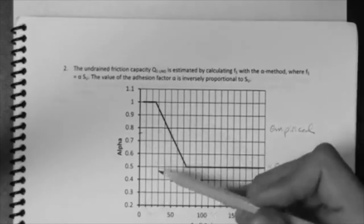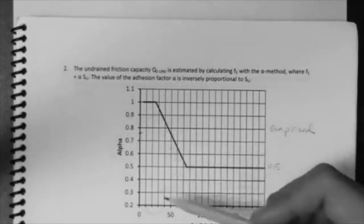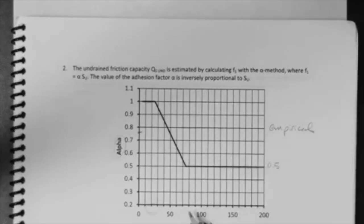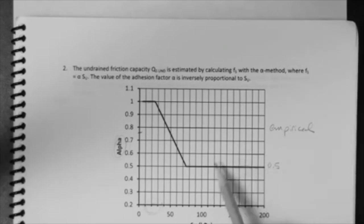Now, what happens is this. When the clay is soft or has a low strength, then it adheres very well to the pile. And this alpha is called the adhesion factor. So again, when the clay is soft, it adheres well to the pile, therefore the alpha is high. Conversely, when the clay is stronger, it adheres less efficiently to the pile. And therefore, the adhesion factor alpha is lower, the minimum being 0.5.